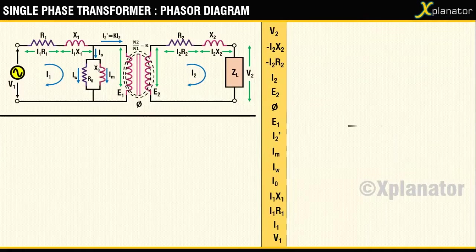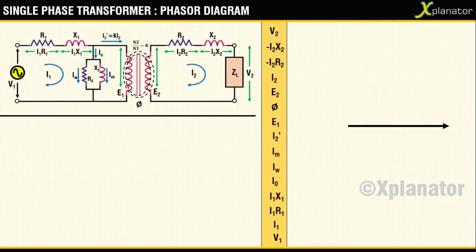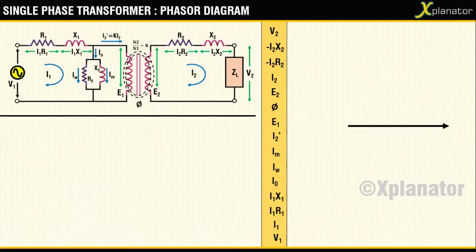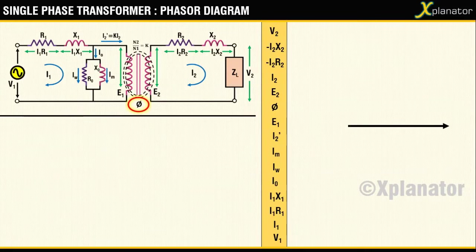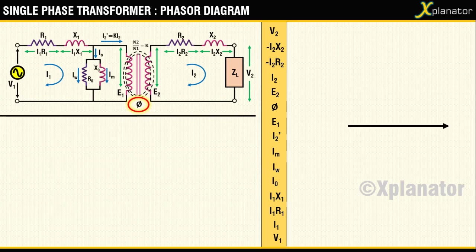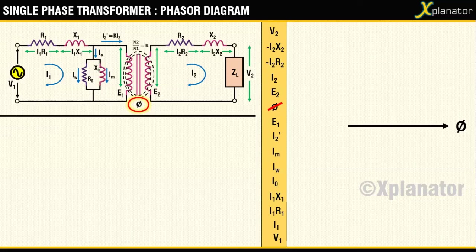To start with, you draw a reference line. Now this line represents that one parameter which is common to both the primary as well as the secondary circuit. It is evident looking at the circuit that this term has to be the flux Phi. So call this reference line as Phi. One parameter drawn, 14 more to go.